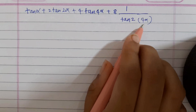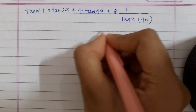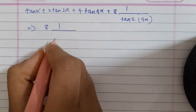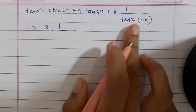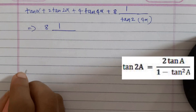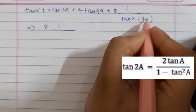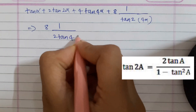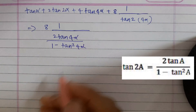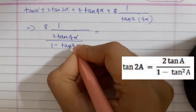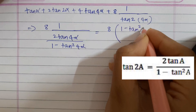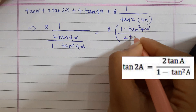This will be tan 2α where α is equal to 4α. We simplify this term using the formula tan 2α = 2tan α / (1 − tan²α). Taking the reciprocal, it becomes 8 × (1 − tan²4α) / (2tan 4α).